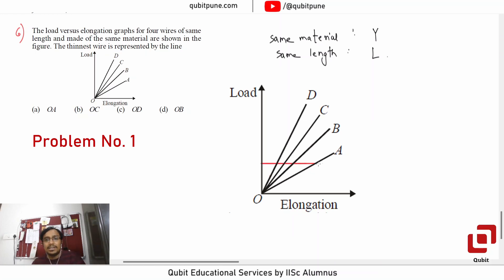In this case, A is going to produce the maximum elongation for same load. Now let us try to write down the equation using Hooke's law.